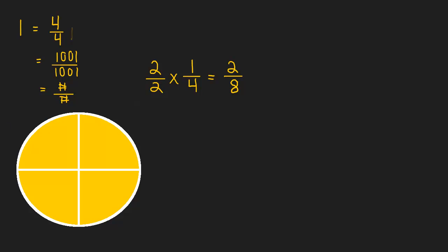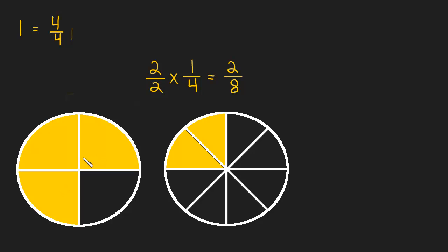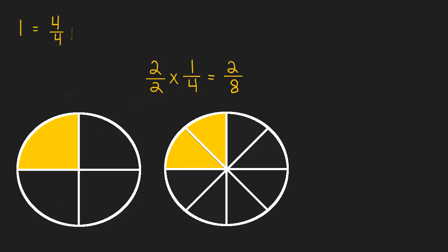So let's see what two eighths looks like. So here's a pie cut into eight equal pieces, and we're going to take two of them. Now, let me go back and do something here. There we go. Okay, so all I wanted to do was show us again what one fourth looks like.